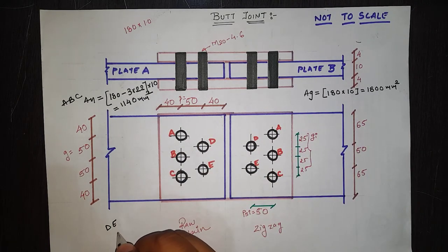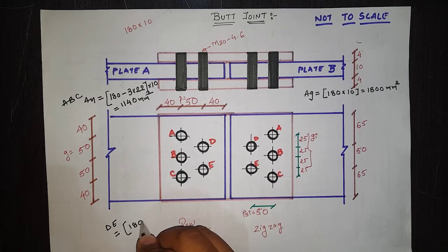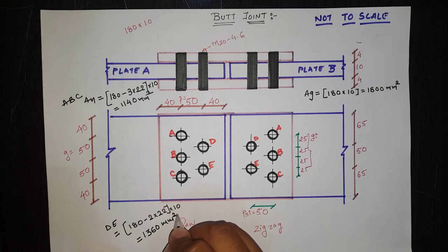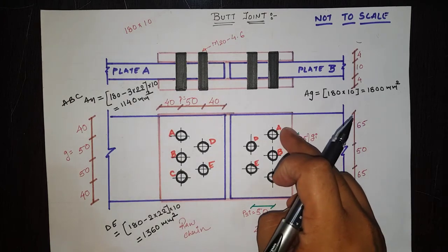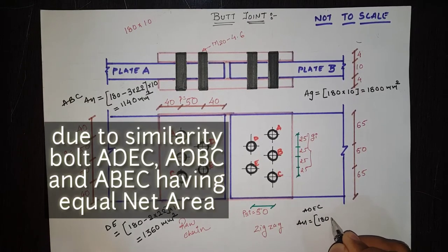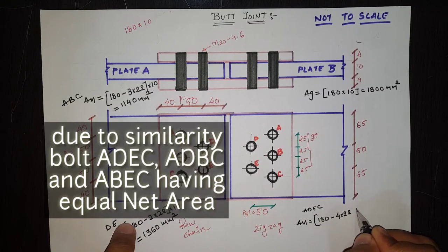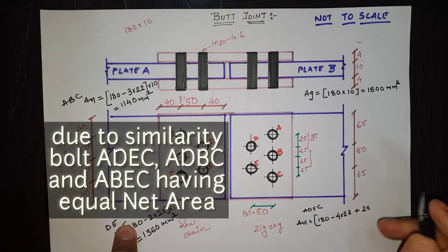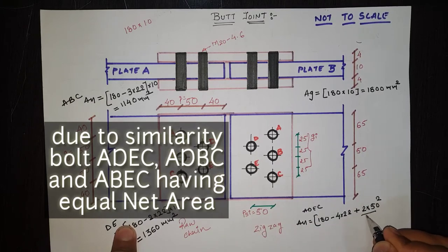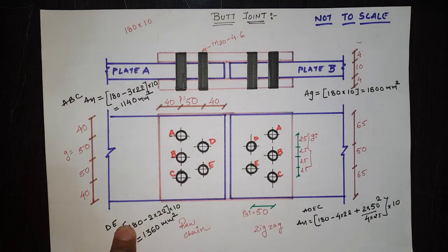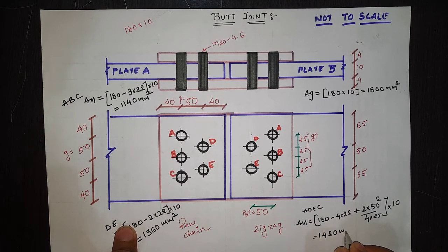For the path D to E (two bolts), An = (180 − 2 × 22) × 10 = 1360 mm². For the zigzag path A-D-E-C (four bolts with two zigzag segments), using the equation An = (b − n·dh + Σpsi²/(4·gi)) × t = (180 − 4×22 + 2×50²/(4×25)) × 10 = 1420 mm².